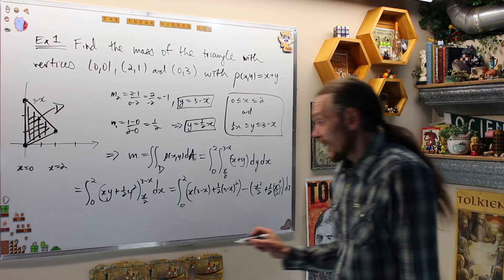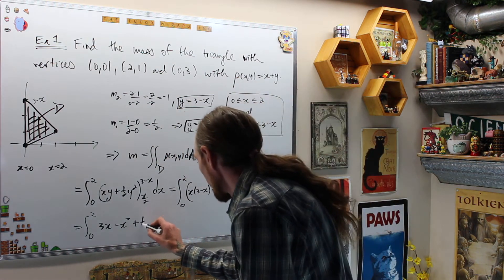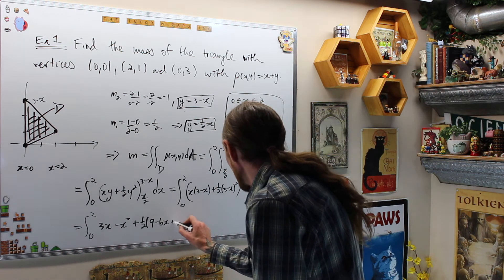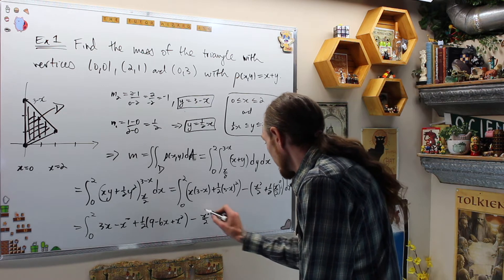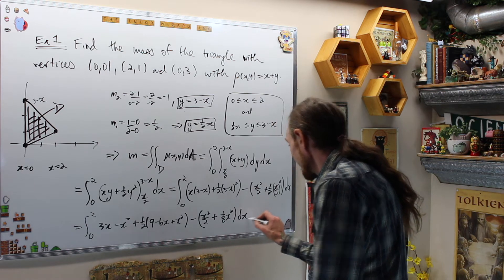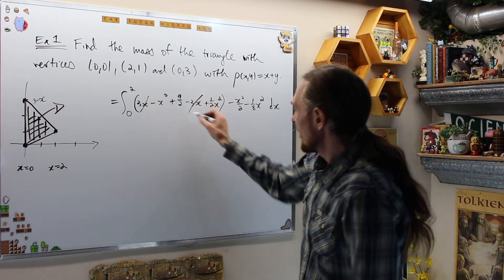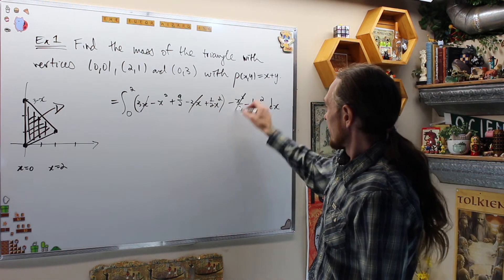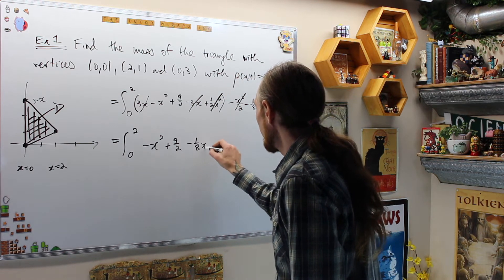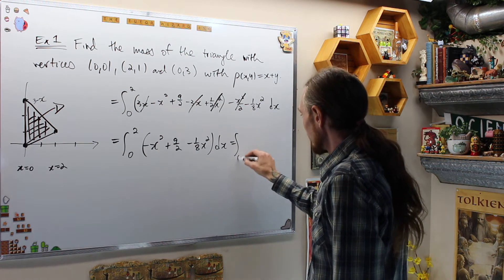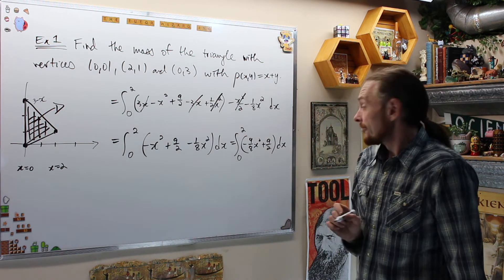Cleaning this up: I get 3x − x² + (1/2)(9 − 6x + x²) − x²/2 + (1/8)x², dx. Expanding and simplifying, the 3x terms cancel and some x² terms cancel, giving me the integral from 0 to 2 of [−x² + 9/2 − (1/8)x²] dx. Combining the x² terms gives the integral from 0 to 2 of [−(9/8)x² + 9/2] dx.